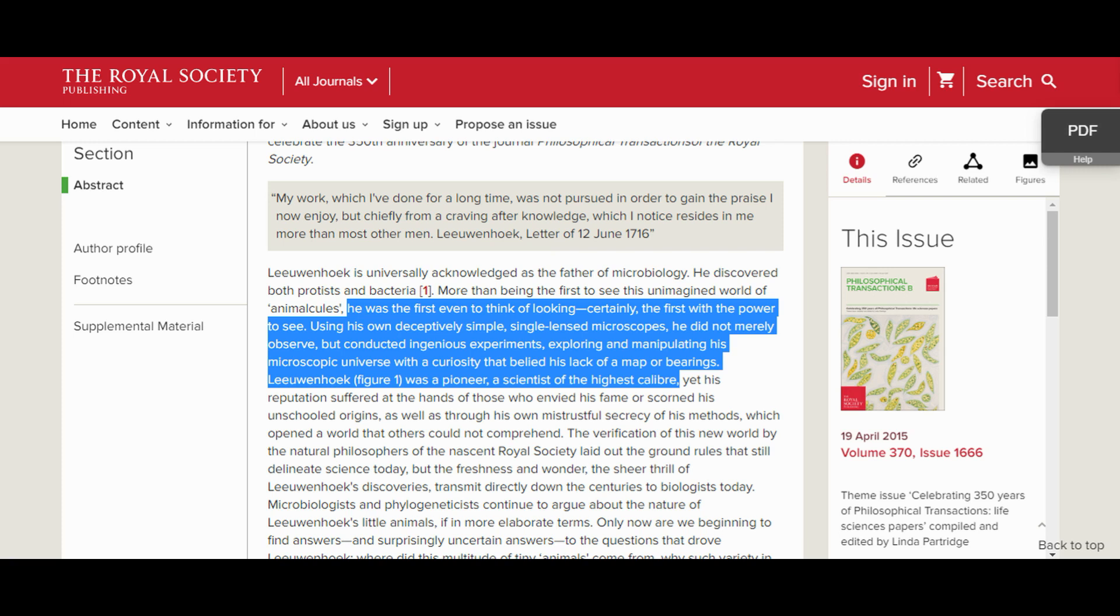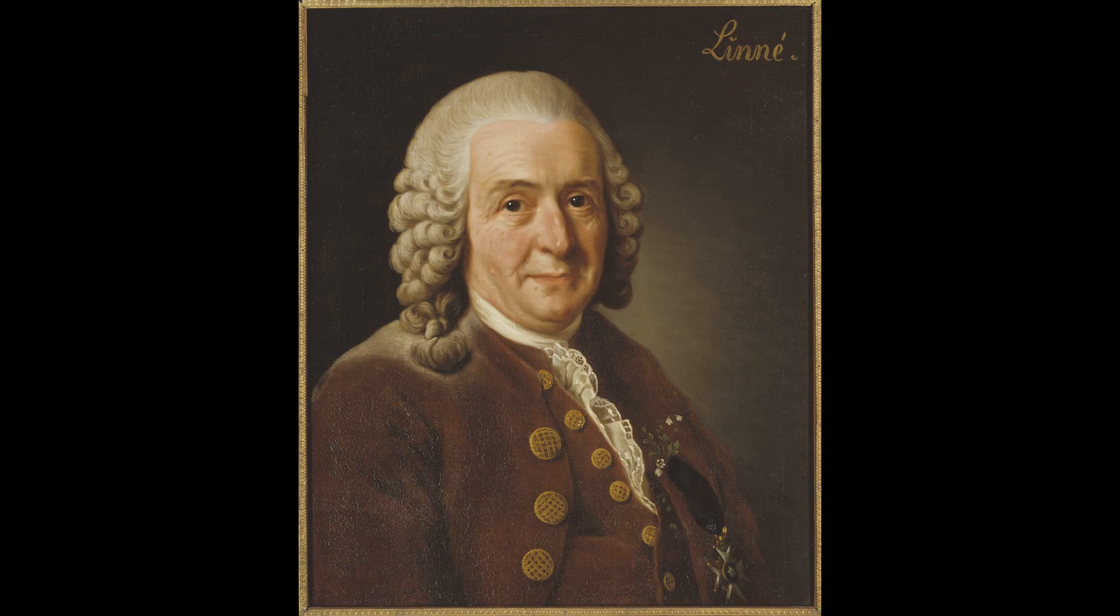Of course, van Leeuwenhoek, too, was still unaware of how many different species of these animalcules there actually were. But his discoveries opened up a whole new world to be explored. In 1758, Swedish botanist Carolus Linnaeus published a book titled Systema Naturae, in which he laid out his taxonomic system for classifying organisms.